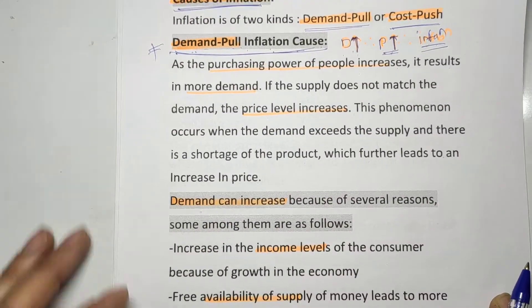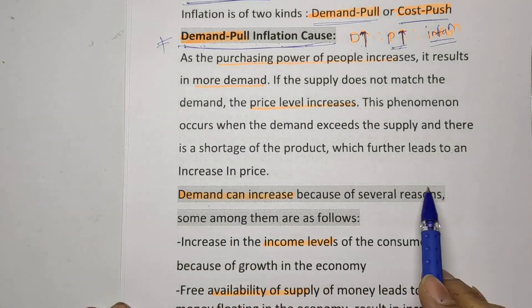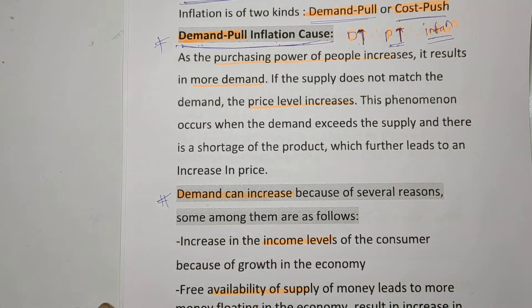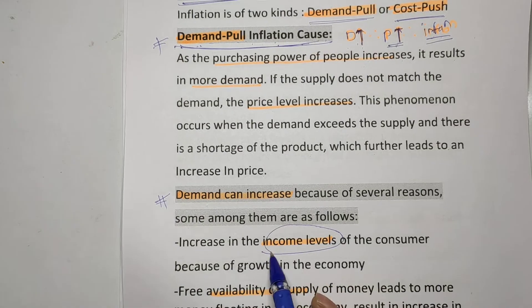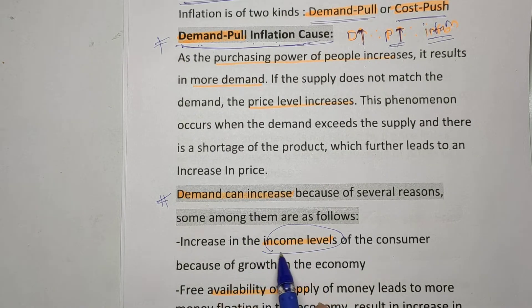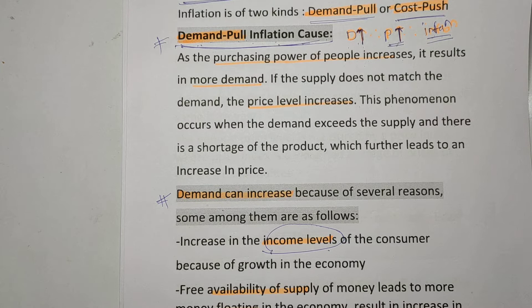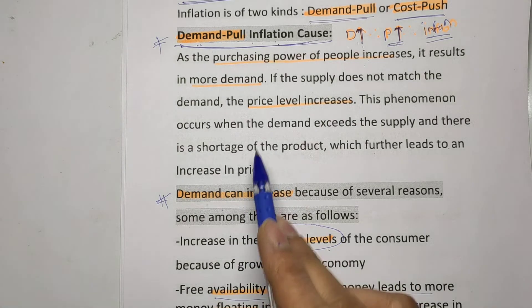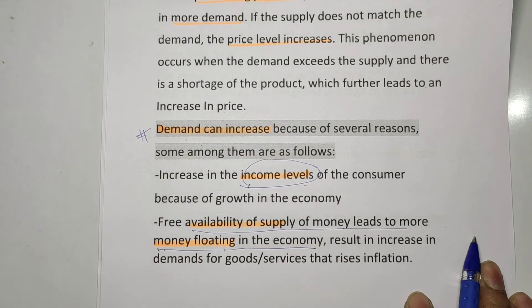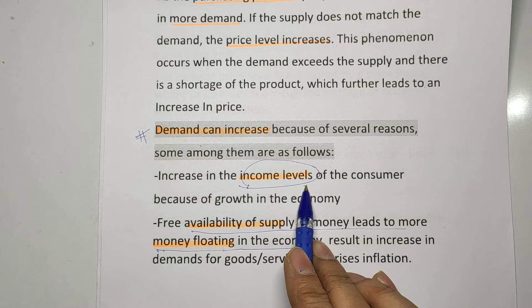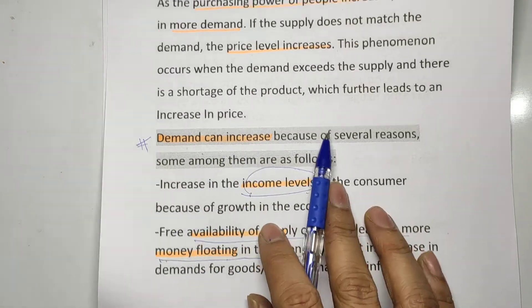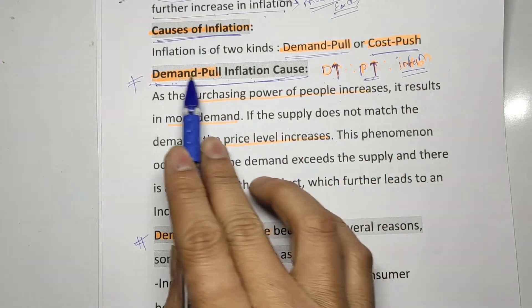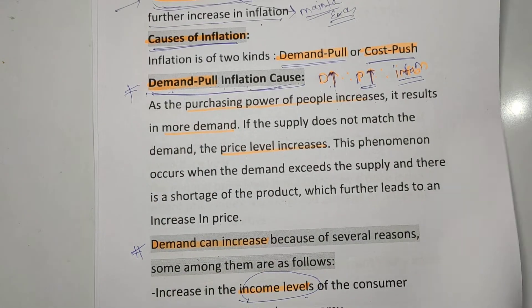Demand can increase for several reasons: an increase in people's income leads them to buy more, raising demand. Also, free availability of money — if more money is infused into the economy, that leads to increased demand and rising inflation. The sequence is: income increases → demand increases → price increases → inflation.